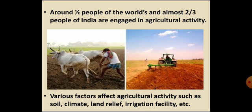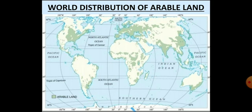Agricultural activity depends on different factors such as soil, climate, land relief, irrigation facilities, size of land holding and many more. The map here shows the distribution of arable land all over the world. Arable land is the land on which the crops are grown. From the map, it is quite clear that there are certain areas where agricultural activity is concentrated, shown through the green areas, because those areas have suitable factors for growing crops.